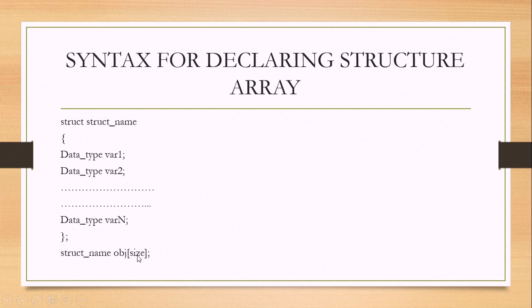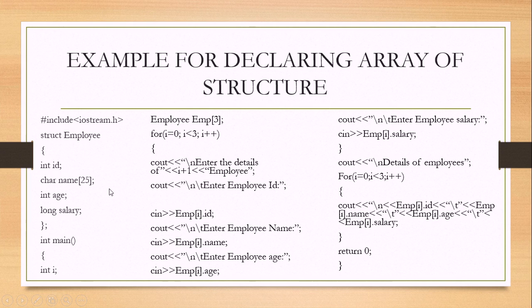Now let's take an overview of the example — this is an array of structure. We will go through it line by line, and in the next lecture we will implement this example in our coding. First, I have included my header file: hash include iostream.h. After that, I have made a structure using the 'struct' keyword, and the structure name is 'employee'.